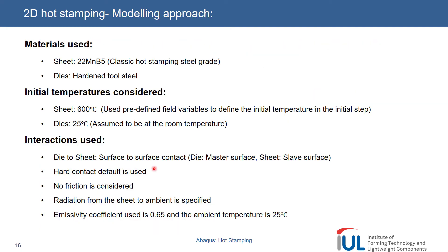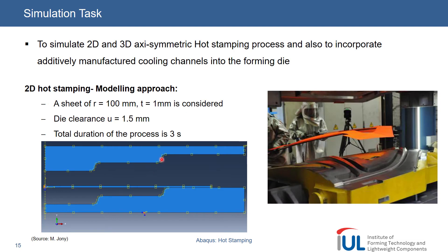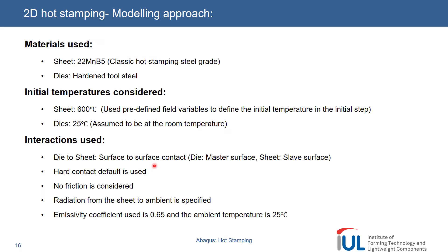For the interactions, we use surface-to-surface contact to get the curvature and especially the pressure distribution in curved areas accurately. This is important because we make use of gap- and pressure-dependent conductivity, so getting the contact pressure between the die and the sheet right is critical. Surface-to-surface does this more accurately than node-to-surface. We can use hard contact here because the overall simulation is not super challenging numerically — we've kept the geometry fairly simple.